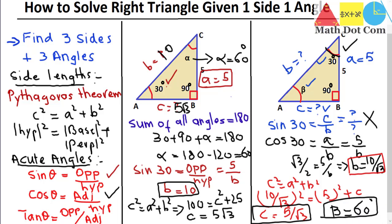This is how you can solve a right triangle when given one side and one angle. Keep in mind the method and make sure you have clear understanding of the trigonometric ratios — sin θ, cos θ, and tan θ. That's all from today's lecture. Thank you.